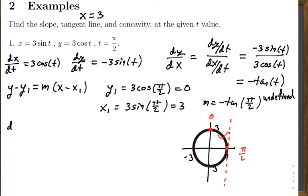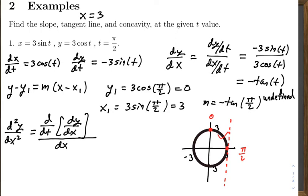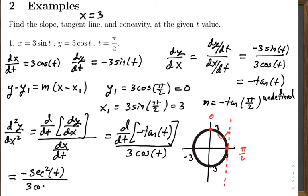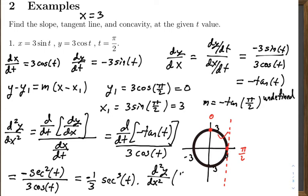The concavity is not going to be defined there because the first derivative is not defined there, but we can still find the second derivative. The second derivative d²y/dx² is the derivative with respect to t of dy/dx, all over dx/dt. The derivative of negative tangent t divided by 3 cosine t equals negative secant² t over 3 cosine t, which simplifies to negative one-third times secant³ t. This is undefined at t = π/2.